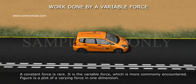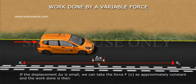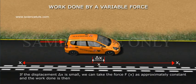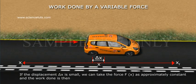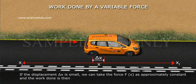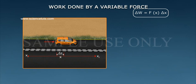Figure is a plot of a varying force in one dimension. If the displacement Δx is small, we can take the force F(x) as approximately constant, and the work done is then ΔW = F(x)Δx.